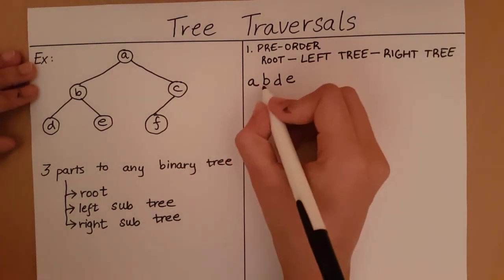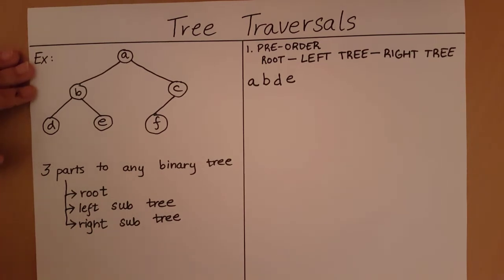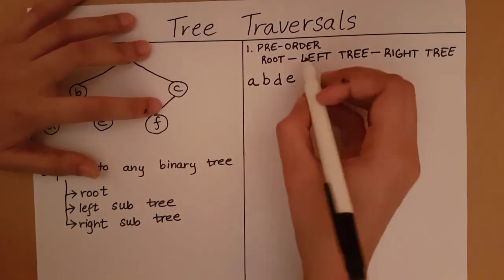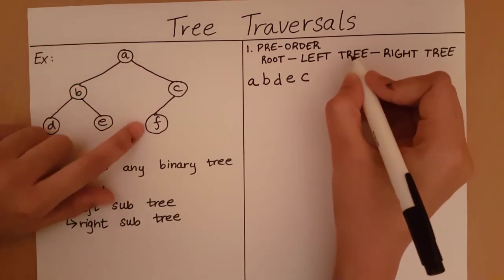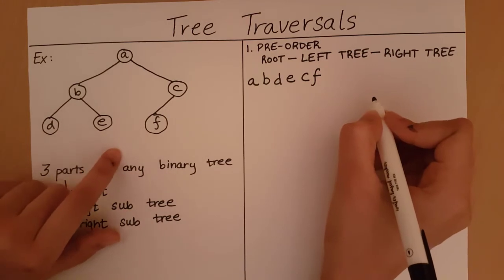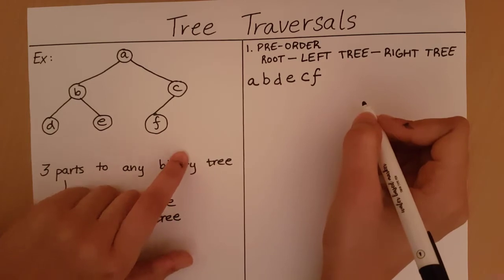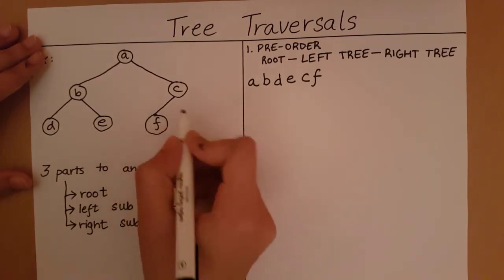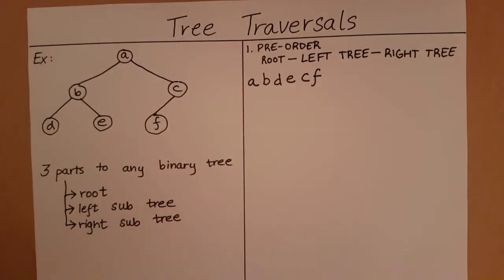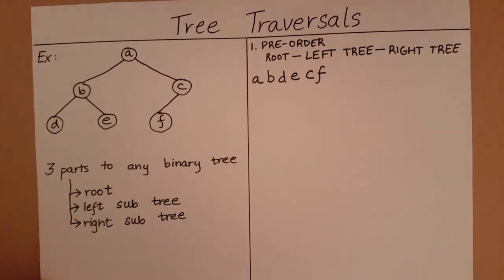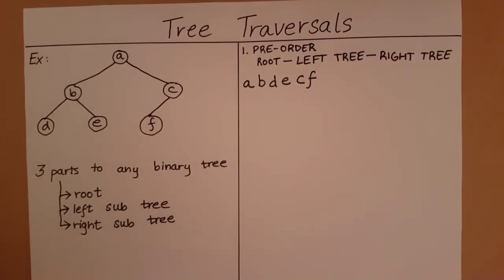Now I have given A and traversed all elements to the left of A. It is time to traverse the right subtree of A, which is the subtree rooted at C. I give the root C first, then go to the left subtree of C, which is F. For F, I give the root F; its left and right subtrees have no elements, so the subtree rooted at F is completely traversed. Then I go to the right of C — there is no element there. So the subtree rooted at C has been completely traversed.